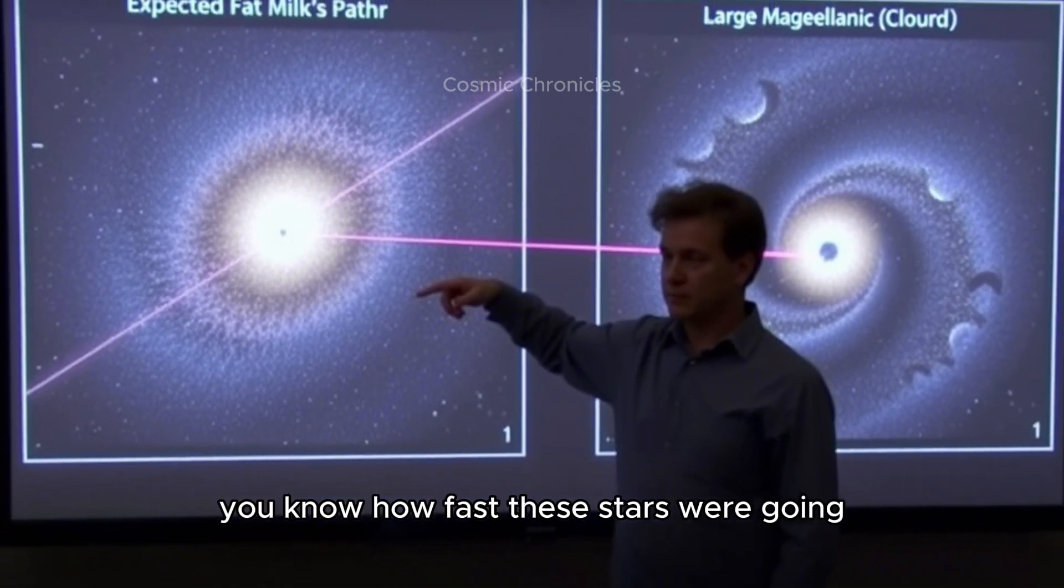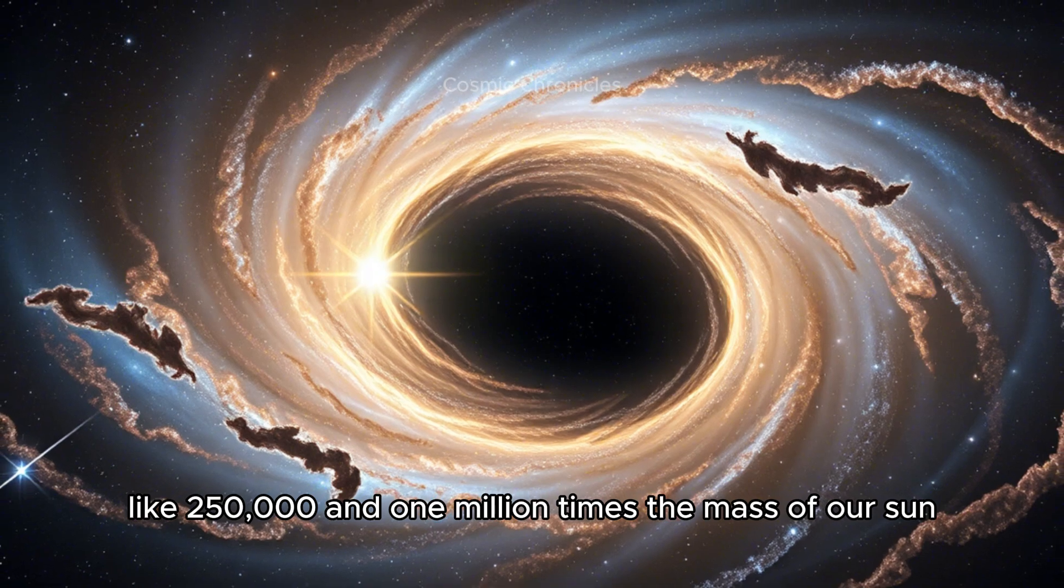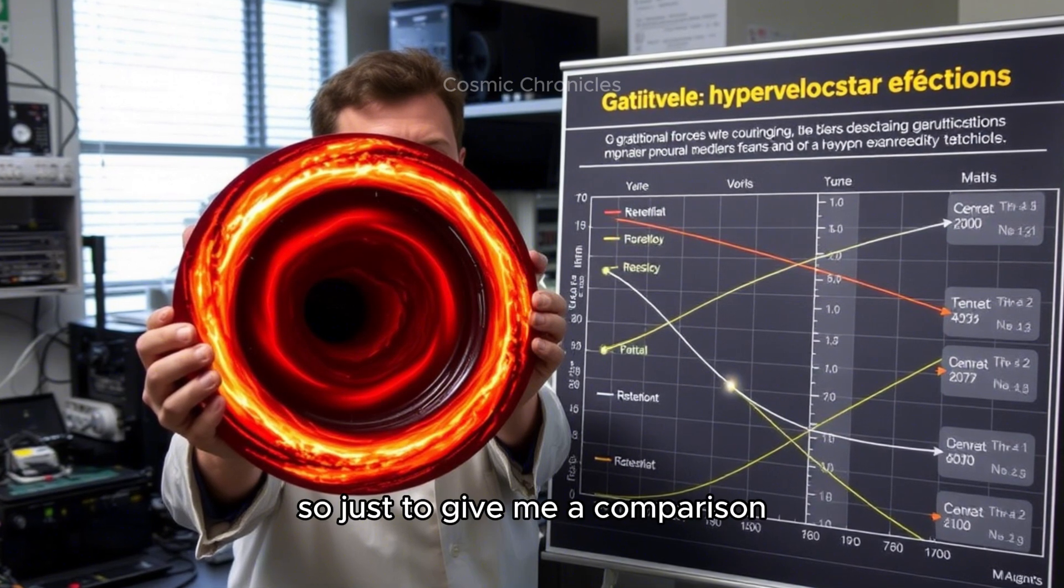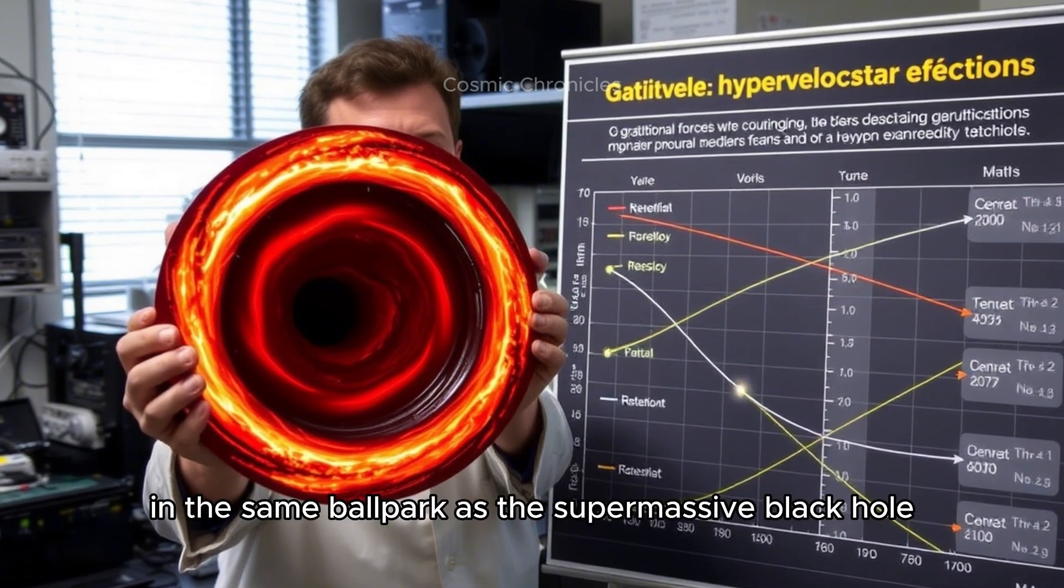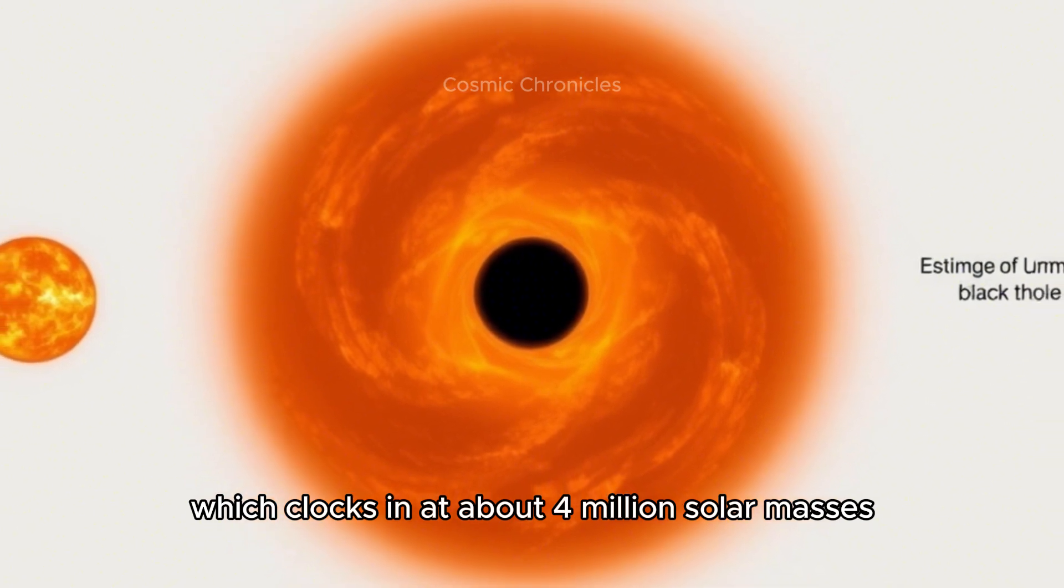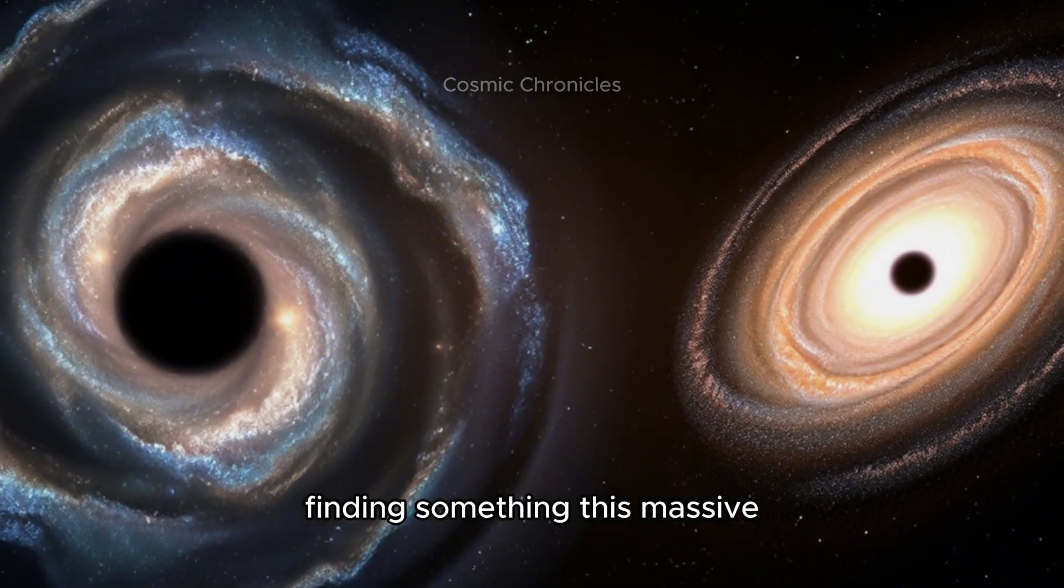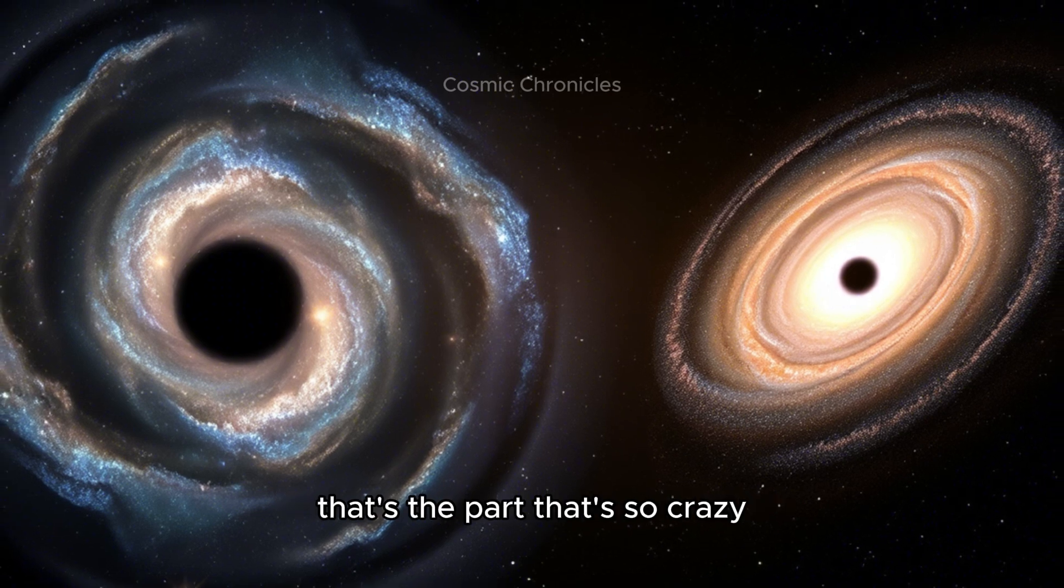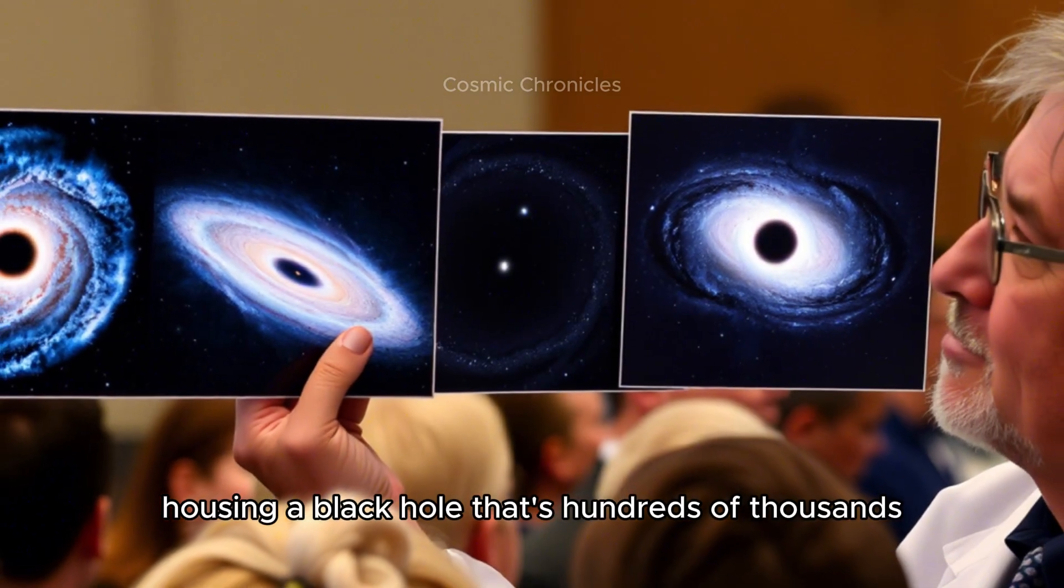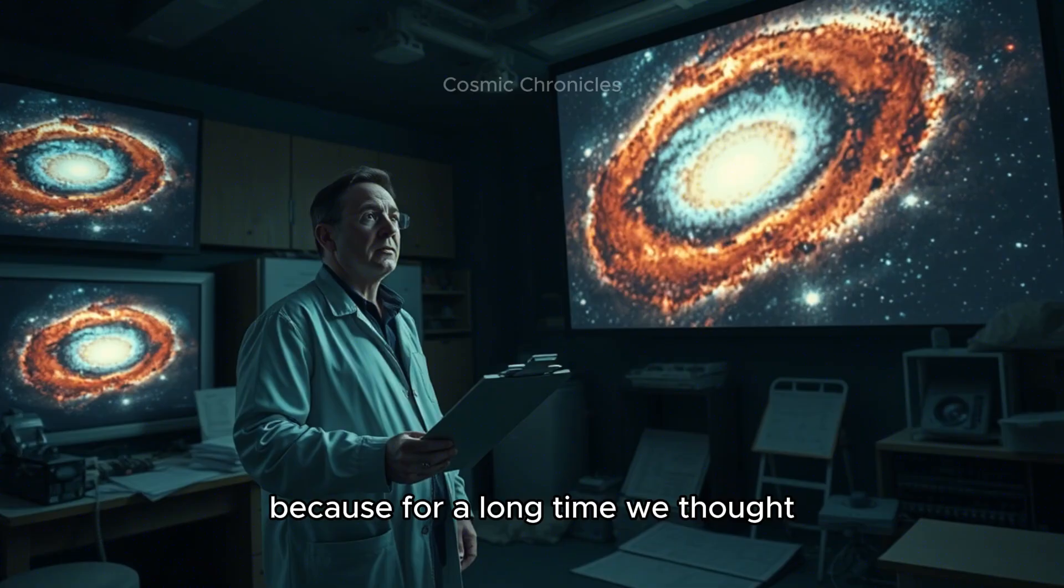The odds of having multiple random events all in the same area that could produce this kind of focused stars being kicked out, the odds are incredibly low. Based on how fast these stars were going, the researchers were able to estimate how massive this potential LMC black hole is. They're saying it's somewhere between 250,000 and 1 million times the mass of our sun. To give a comparison, it's definitely smaller than Sagittarius A*, which clocks in at about 4 million solar masses, but it's still firmly in the supermassive black hole category.